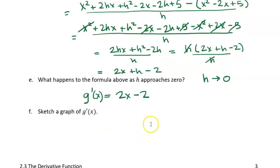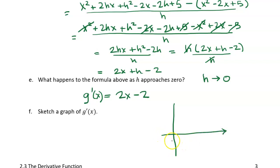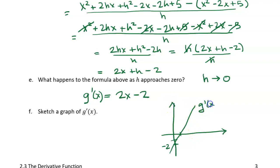What does that look like as a graph? It's a linear function. It has a y-intercept of negative 2 and a slope of 2, so it crosses at the point (1, 0). Let me draw a straight line through those points — this is a graph of g prime of x. It's just a line.